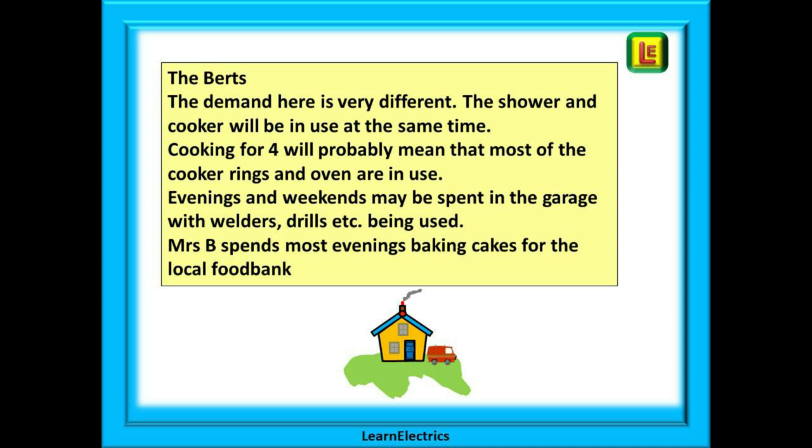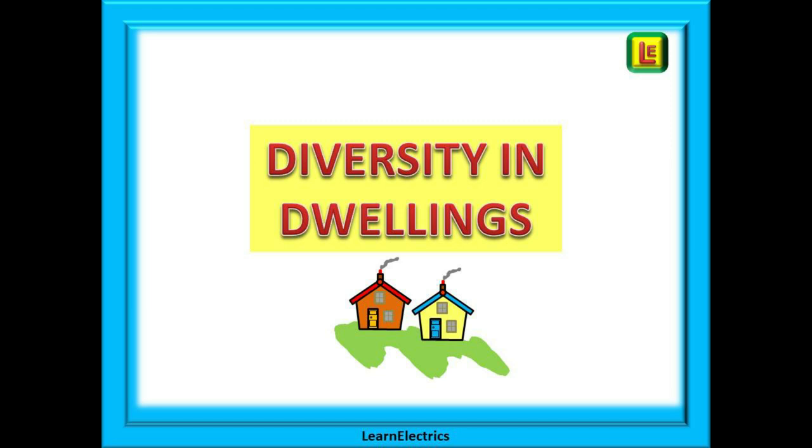I hope you can see from these two scenarios, which are actually based on fact, that you cannot just look at a certain size house from the outside and determine the diversity. You also need to know what's going on inside the house in order to make a more accurate assessment. Let's look at diversity in dwellings first and then consider demand.